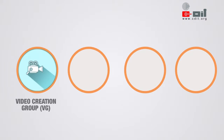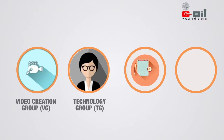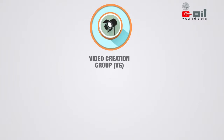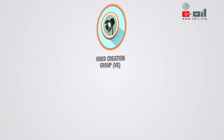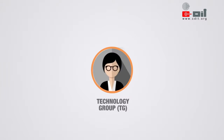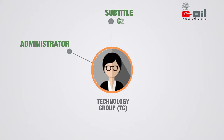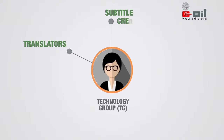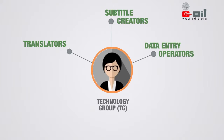The four groups are: Video Creation Group, Technology Group, Academy Group, and Data Entry Operators. Once the shooting process is finished, the final unprocessed video is shared with the Technology Group. The Technology Group consists of an Administrator, Subtitle Creators, and a Project Coordinator. The Project Coordinator creates and manages the database of Translators, Subtitle Creators, and Data Entry Operators.